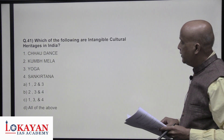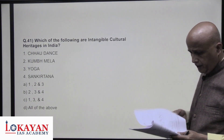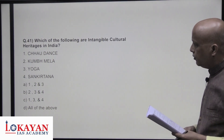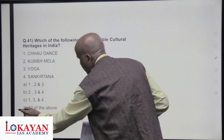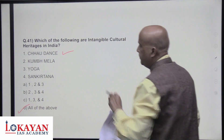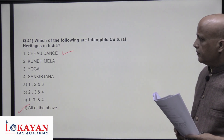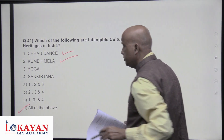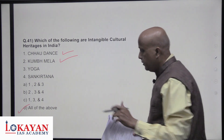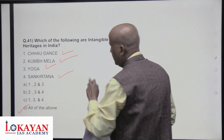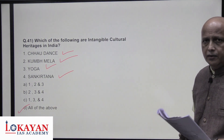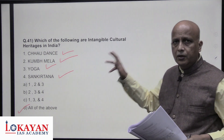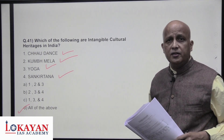Which of the following is an intangible cultural heritage in India? All four are intangible cultural heritages: Chhau dance (one of India's classical dances), Kumbh Mela of Prayagraj, Yoga, and Sankirtana (a method of chanting). One should memorize the full list of 14 intangible cultural heritages of India.